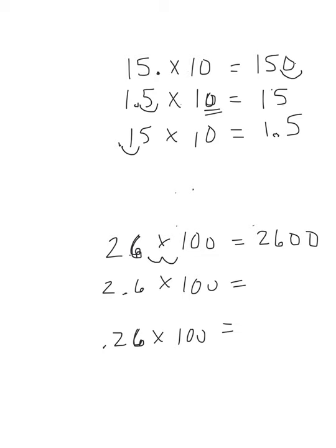2.6 times 100, which would be 260. Because again, I had to move my decimal over two places, and then I have my place value holder to allow it to represent its value. Then if you have 0.26 times 100, well, 0.26 times 100 would actually be an answer of 26.